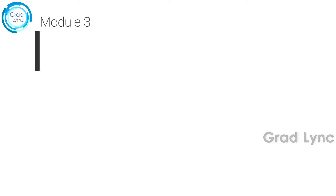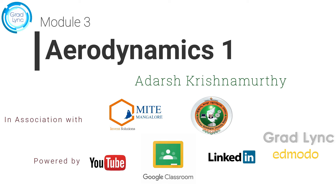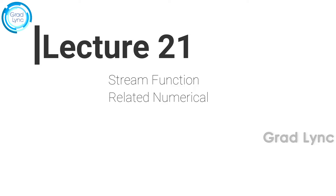Welcome back to this online series on aerodynamics. Today we are going to discuss the different types of flows — rotational and irrotational flows — and how we can derive equations for vorticity, circulation, and other important terms in aerodynamics. Let's begin and try to understand a new term called the stream function.